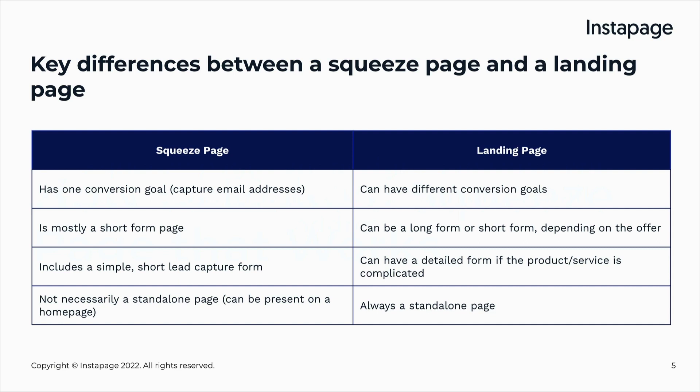Other landing page goals include submitting contact information through a lead generation form, signing up for a free trial, or clicking through to another page. What separates the squeeze page from the landing page is that the objective of the squeeze page is always the same — to capture your visitor's name and email address. Therefore, squeeze pages usually have less copy, use fewer design elements, and have only one or two form fields.